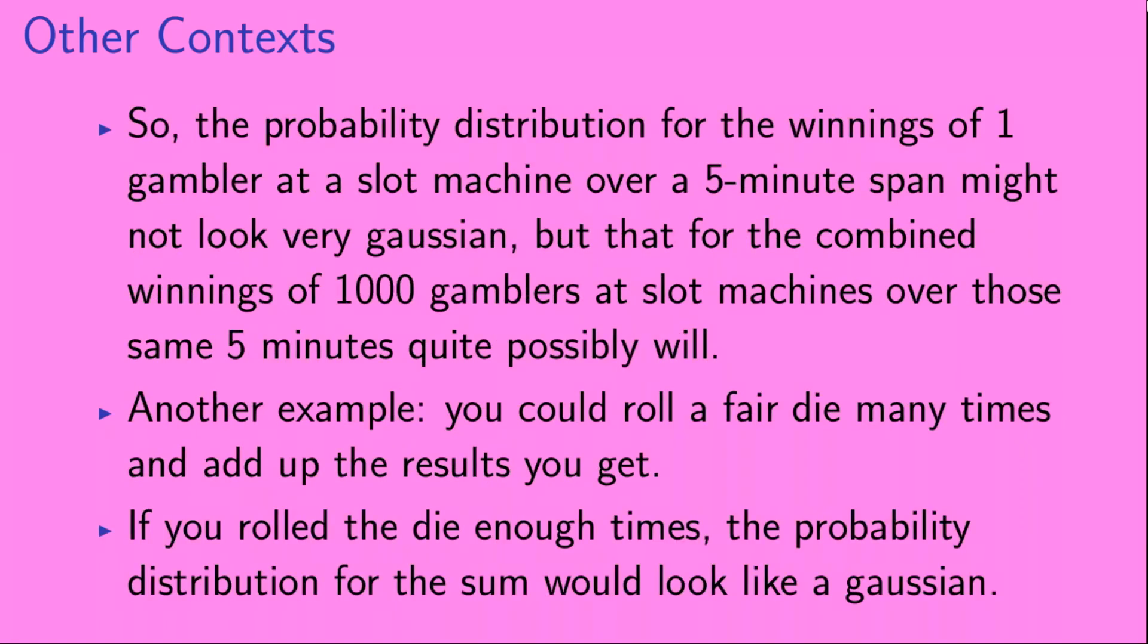So, for example, the probability distribution for the winnings of one gambler at a slot machine over a five-minute span might not look very Gaussian. But that for the combined winnings of 1,000 gamblers at slot machines over those same five minutes quite possibly will.